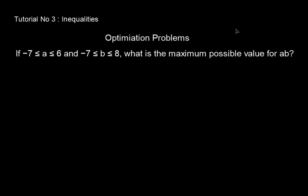These types of problems are known as optimization problems. If -7 ≤ a ≤ 6 (this is a compound inequality with limits on both sides) and -7 ≤ b ≤ 8, what is the maximum possible value of ab?